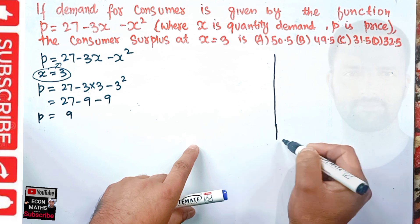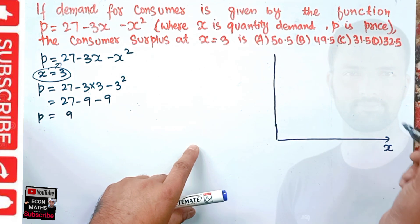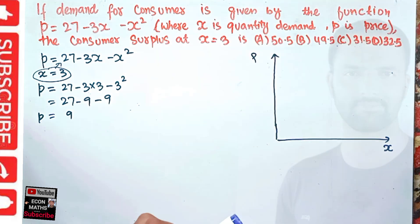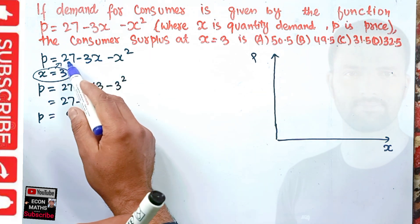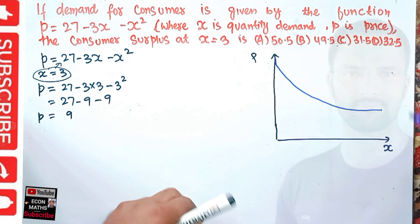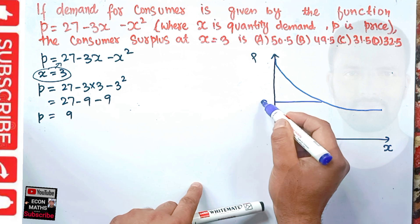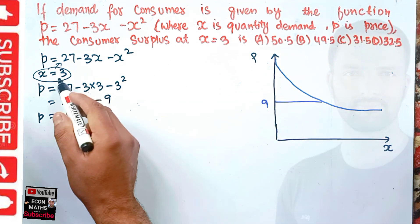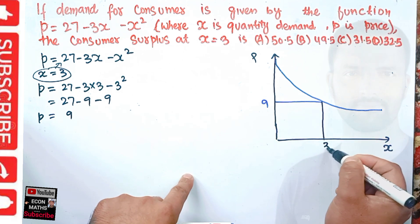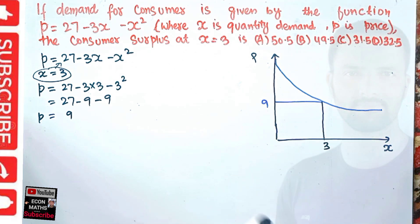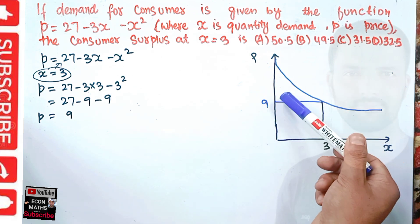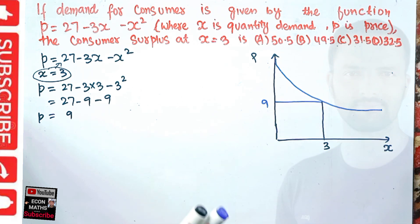We have quantity on the horizontal axis and price on the vertical axis. We have a nonlinear demand function with an intercept of 27. The equilibrium price is 9, shown on the vertical axis, and the equilibrium quantity is 3, shown on the horizontal axis. Consumer surplus is the area which lies above the equilibrium price and below the demand curve.